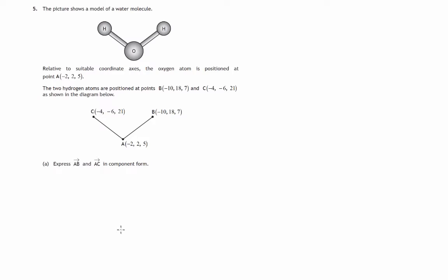In this first part we're asked to express AB and AC in component form. So let's look at the journey from a to b. In terms of position vectors b minus a. Remember the position, there's some origin somewhere, the position vector of b is how do you get from the origin to the point b. Components therefore are negative 10, 18, 7. Minus how do you get from the origin to the point a. Components are negative 2, 2, 5.